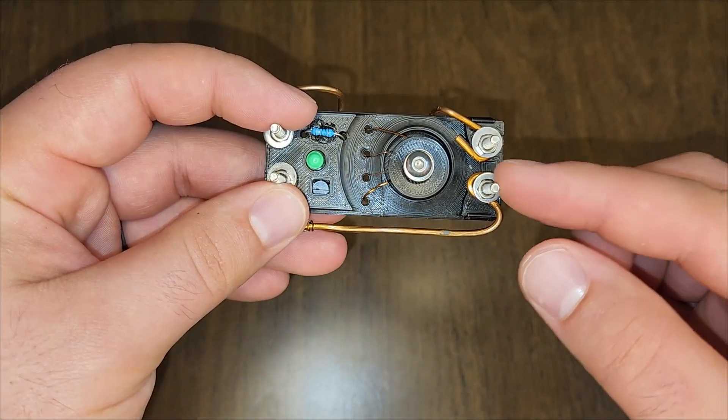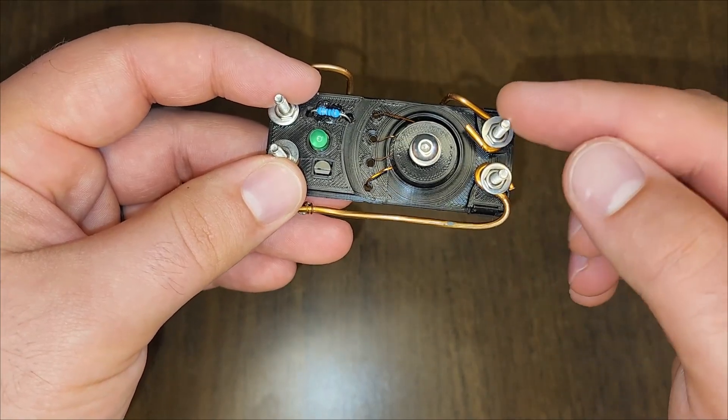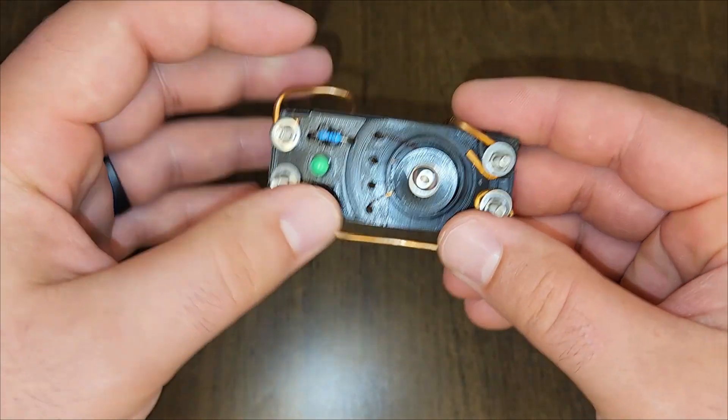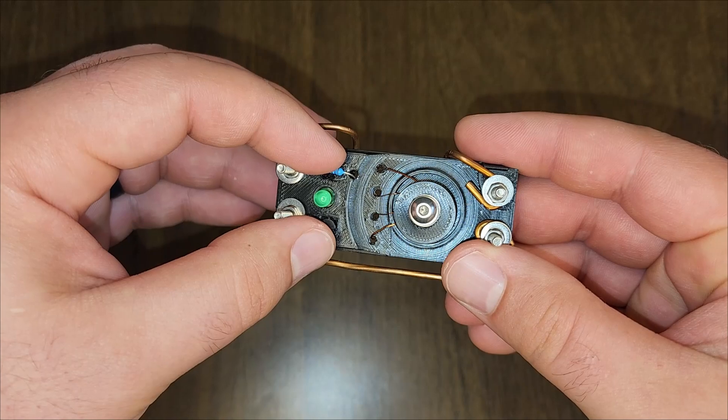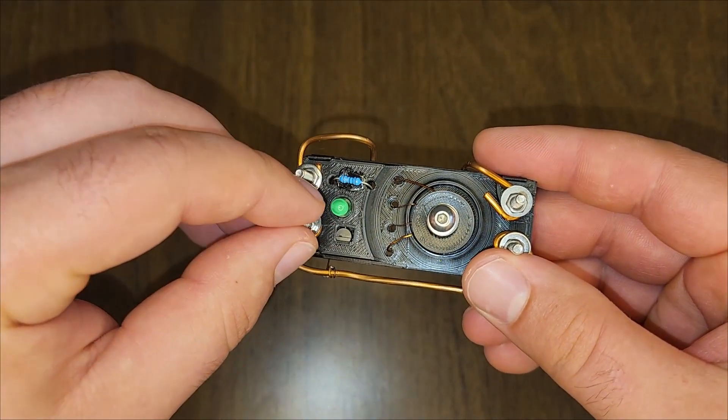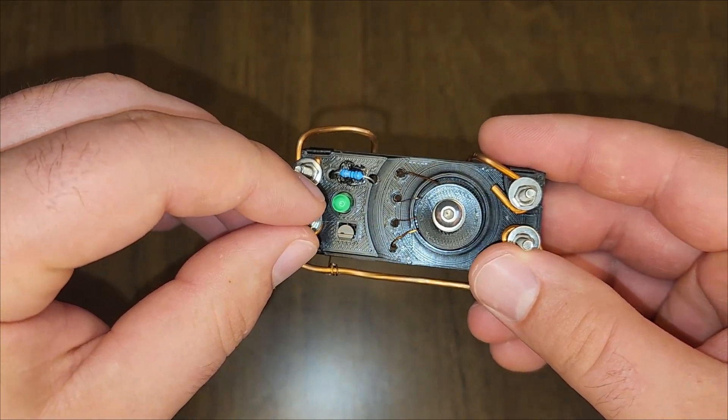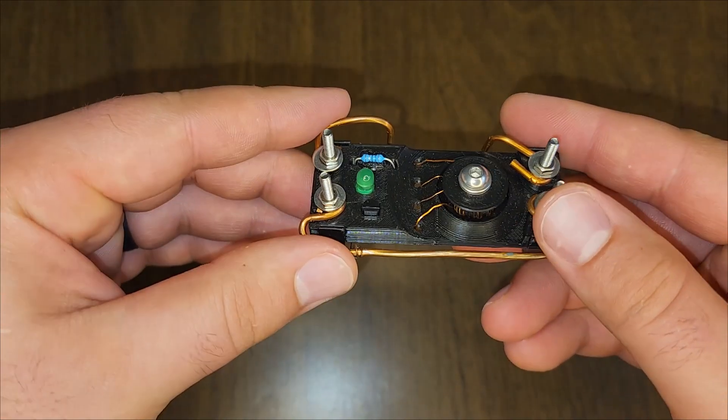Power and ground go into these two terminals here. This is the ground side. This is the power side. The power flows through the joule thief circuitry and boosts the voltage to a usable level that powers the LED. When this LED lights up that's an indication that it's working.